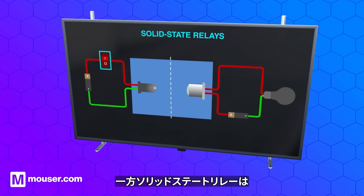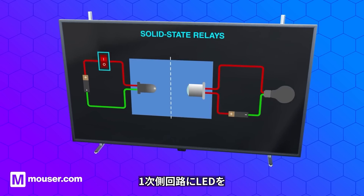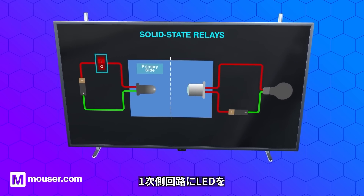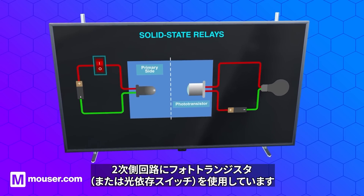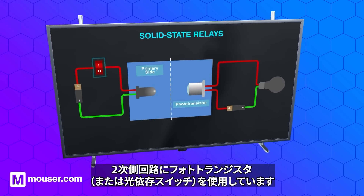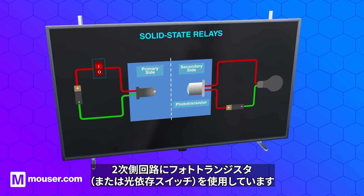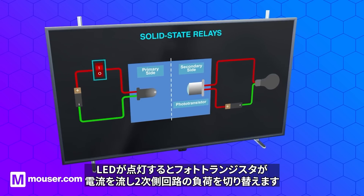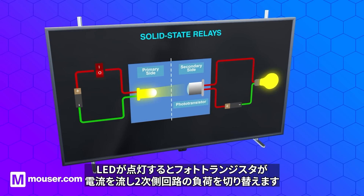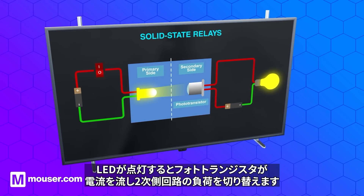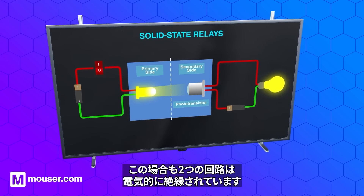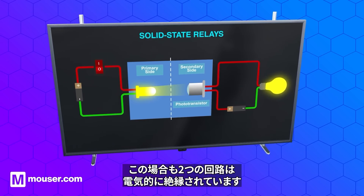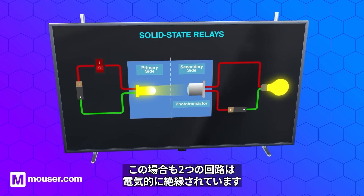Solid-state relays typically use an LED in the primary circuit and a photo transistor or light-dependent switch in the secondary circuit. When the LED is switched on, the photo transistor allows current to flow, switching the secondary circuit load. Again, the two circuits are electrically isolated from each other.